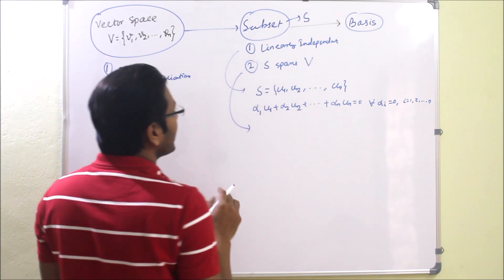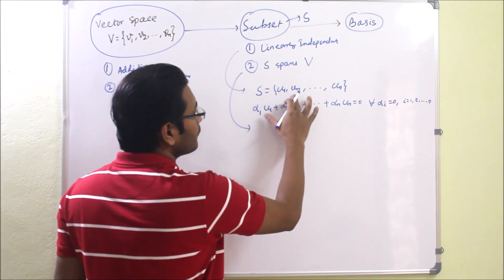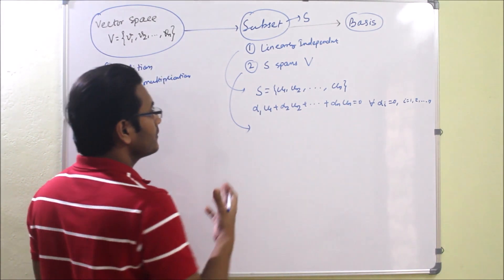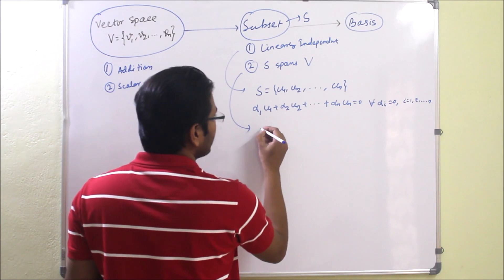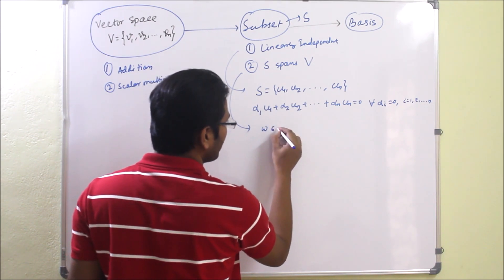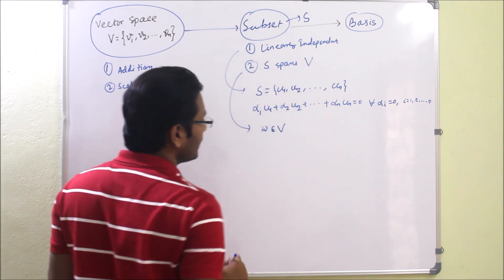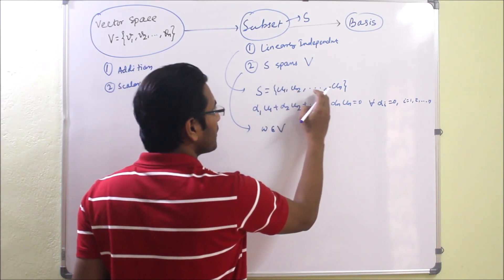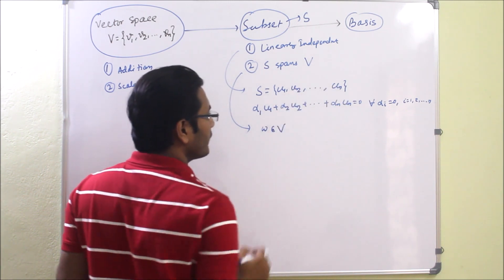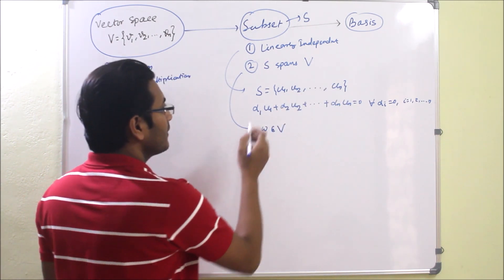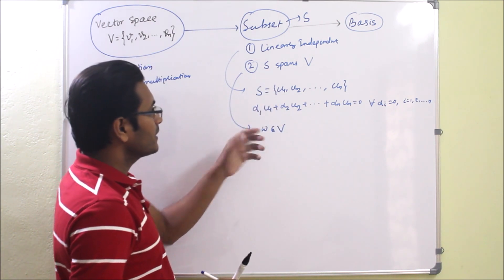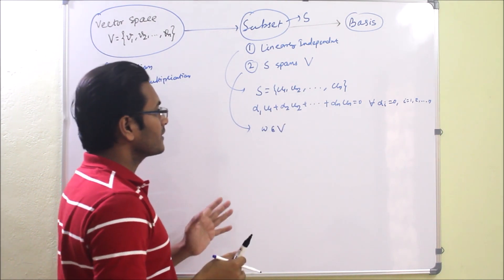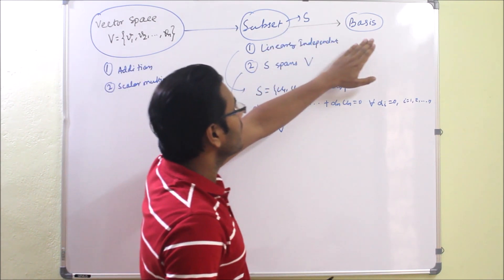The second property is that S spans V. This means vectors U1, U2, ..., Un generate the vector space V. If any arbitrary vector W that is in V can be expressed in terms of U1, U2, ..., Un, then we say S spans V. Using those vectors we can generate all vectors of the vector space, and then that will be called a basis.